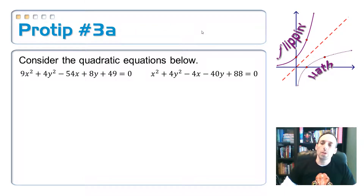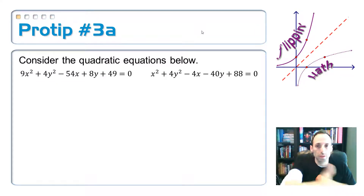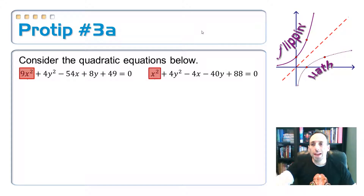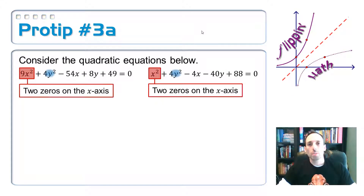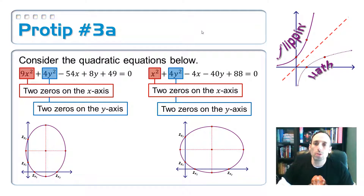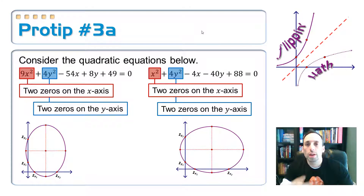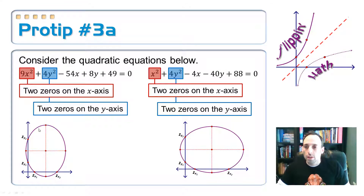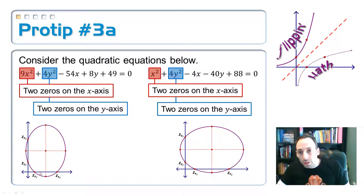Notice that these equations are quadratic in both x and y. From the x-squared terms, using properties from algebra, I know the equation has to have two zeros on the x-axis. From the y-squared term, it has to have two zeros on the y-axis. With two zeros on each axis, one of the ways I can connect these points is by making an ellipse — it connects those points on both axes, as shown in both pictures.